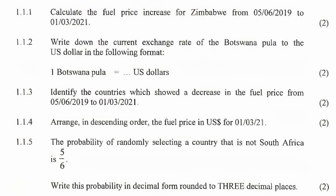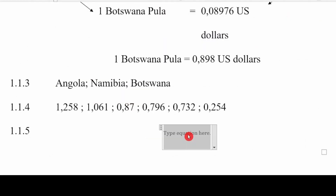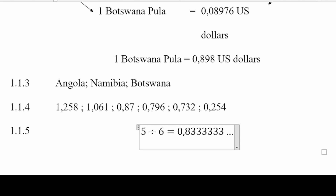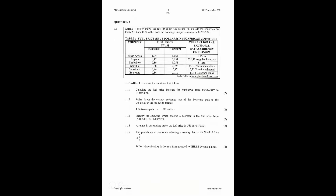Question 1.1.5 states that the probability of randomly selecting a country that is not South Africa is 5 over 6, and asks us to write this in decimal form rounded to three decimal places. Probability can be expressed as a common fraction, a decimal, or a percentage. Using a calculator, 5 divided by 6 gives 0.83 recurring, which rounded to three decimal places is 0.833. And that's it for question 1.1 of the 2021 November Mathematical Literacy examination.